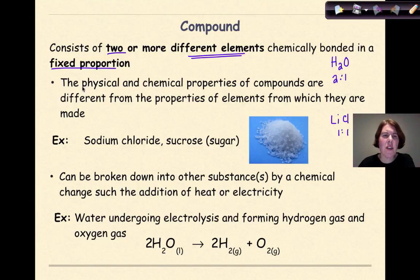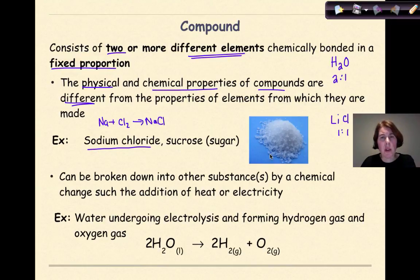Another thing to remember about compounds is that the physical and chemical properties of a compound are going to be different from the properties of the elements from which they're made. Classic example is sodium chloride. We know that sodium chloride is composed of sodium metal, which is a very reactive metal, and chlorine gas, which is Cl2, which if you breathe it in can be very detrimental to your health. But when these two elements react together and they form the compound NaCl, or sodium chloride, we form something like we see in this image over here that you can sprinkle on your french fries.